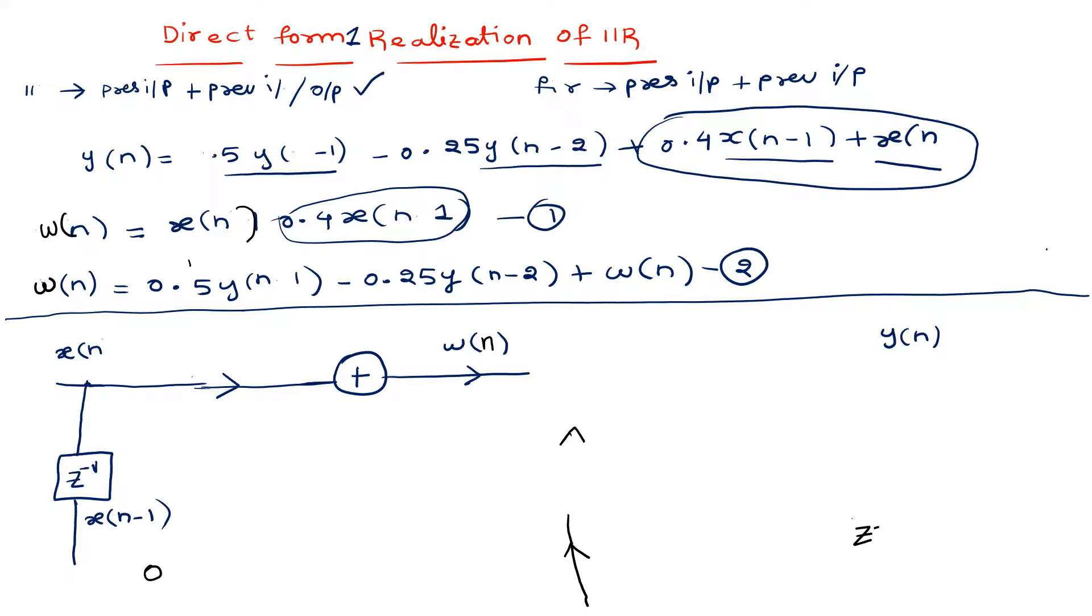It has a multiplication factor or gain of 0.4, so let's multiply this with 0.4. Then this goes to the adder directly. If we add, we get ω(n) = x(n) + 0.4x(n-1). That's the first part done.